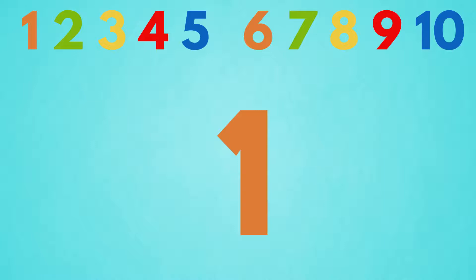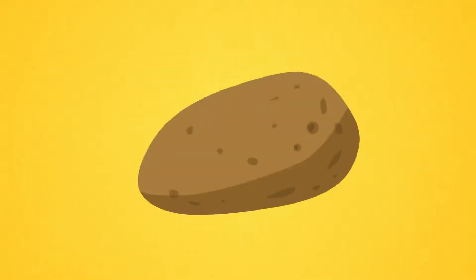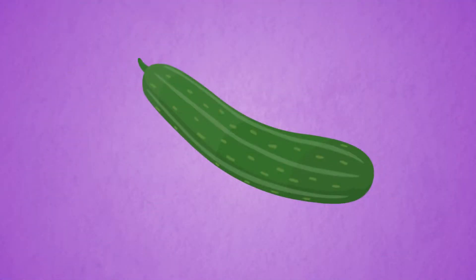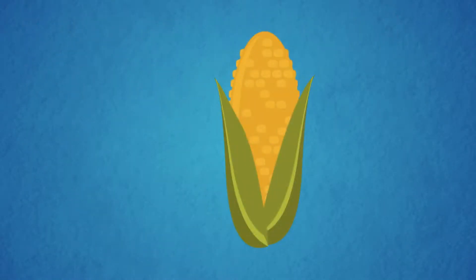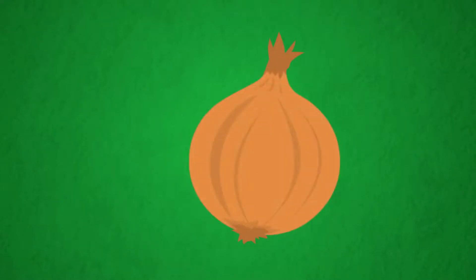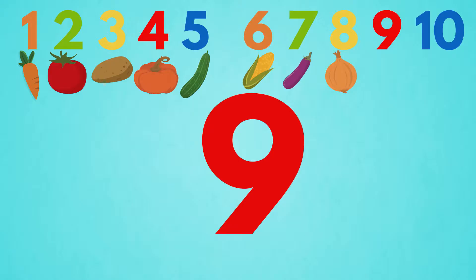Let's start! Carrot 1, tomato 2, potato 3, pumpkin 4, cucumber 5, corn 6, eggplant 7, onion 8, broccoli 9.